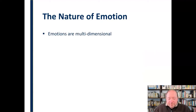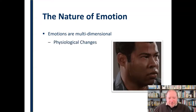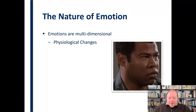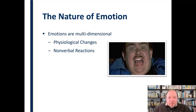Emotions are multidimensional — they affect us in more than one way. First, there are physiological changes that come along with emotion. Strong emotions will increase body temperature, cause more sweating, clammy hands, increased heart rate, and a tightened stomach. Those are physiological changes that happen within our body. We also have nonverbal reactions when we experience a strong emotion — whether it's fright, surprise, joy, or whatever — we're going to respond in a nonverbal way. That's another dimension of emotion: how it impacts our nonverbal communication.